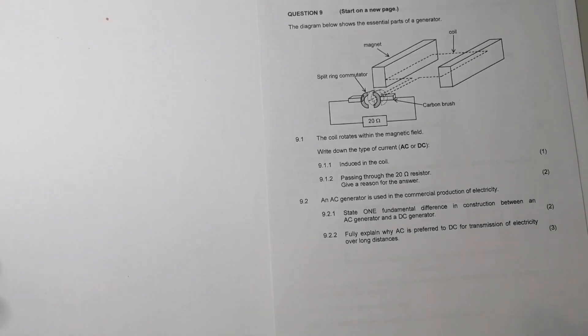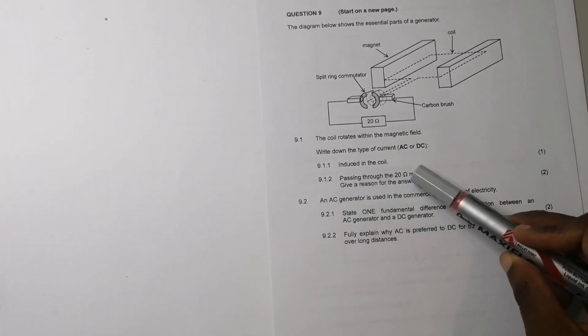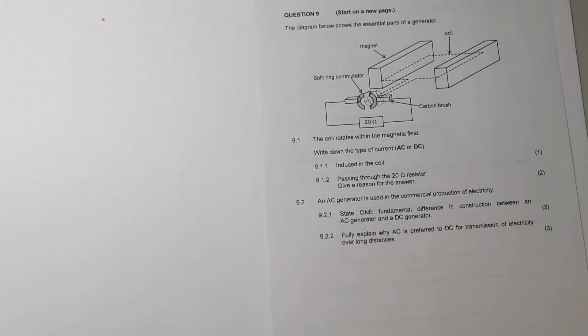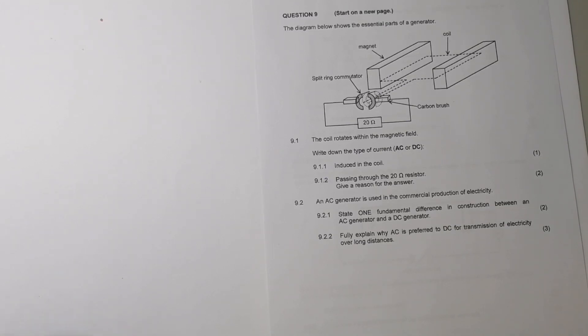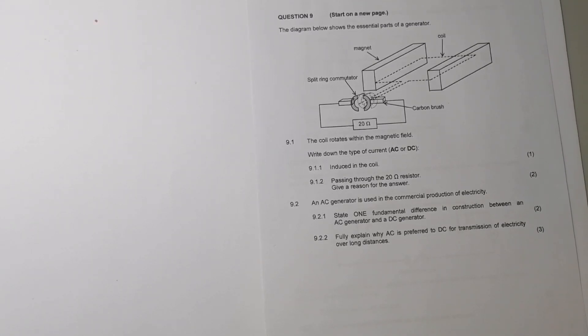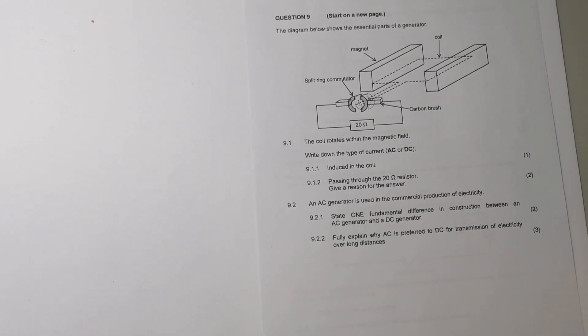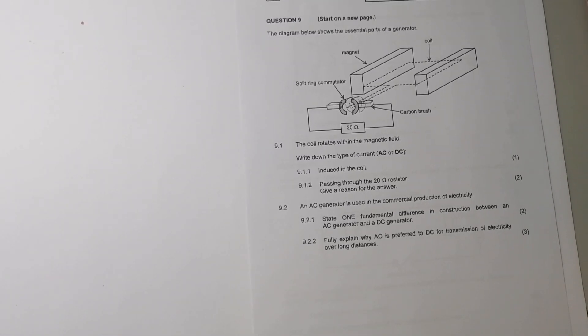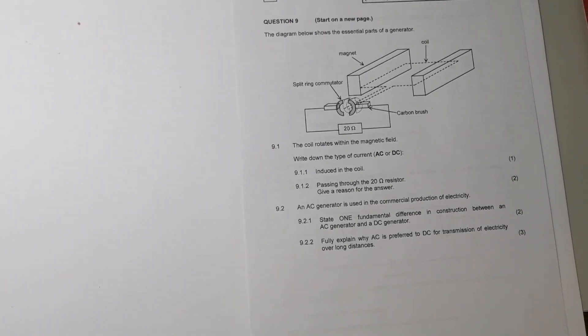Remember when you've got those split ring commutators, in the video that we had on electrodynamics, you can look at that as CD. And once you think CD, then you know it's DC. So in this case, when you've got a split ring, then you know that it's a DC generator that you have. The current passing through the 20 ohm resistor, we know that it's going to be a DC current.